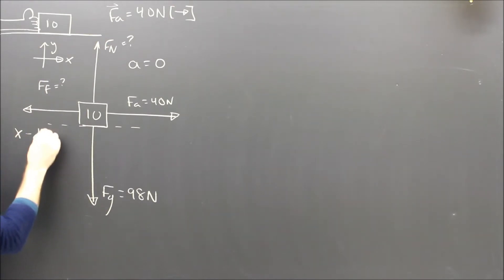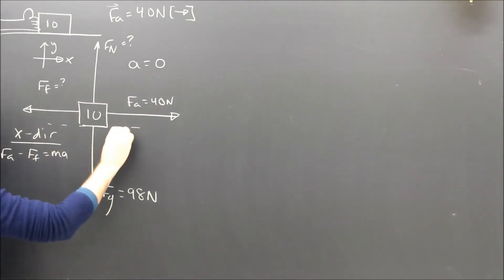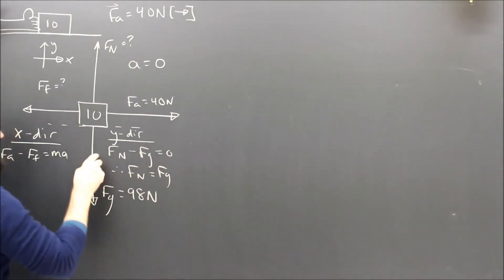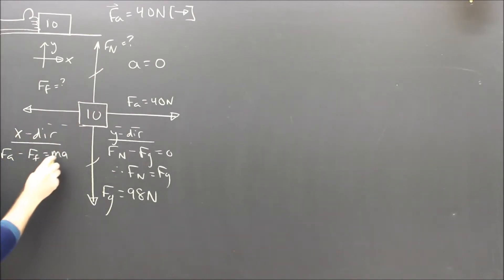But I'll write out my steps anyway just like a good physics student. FA minus FF is equal to MA, and in the y direction I can see that FN minus FG is equal to zero. So FN is equal to FG.